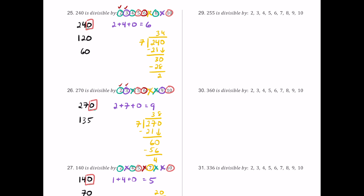For number 29, we have 255. It ends in 5, which is odd, so 2, 4, 8, 6, and 10 all fail. The digit sum 2 plus 5 plus 5 is 12, a multiple of 3 but not 9. The last digit is 5, so 5 works. Dividing 255 by 7: 6 times 7 is 42 with a remainder of 3, so 7 fails. Only 3 and 5 work for 255.